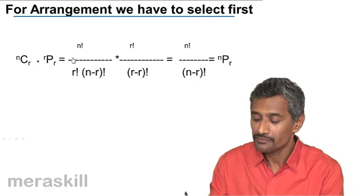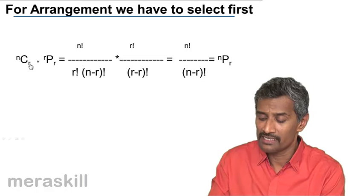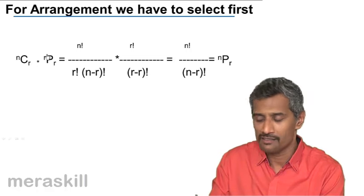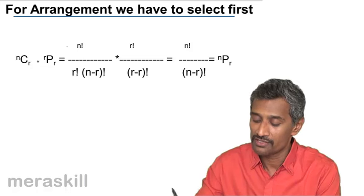So as we told here, one more thing is nCr into rPr is a formula. So if you use just the formula over here, what is the relationship?